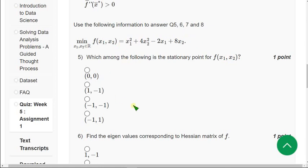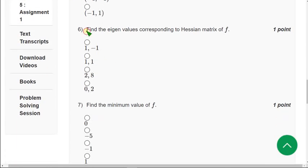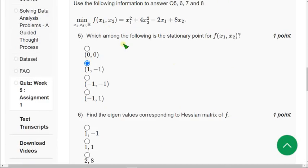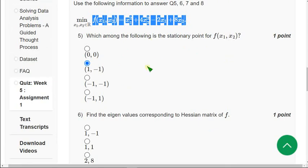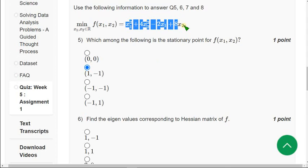So, when I read this, I have got the answer for fifth question as option B, (1, -1). So, mark second option. And moving on to the sixth question. Find the eigenvalues corresponding to Hessian matrix of f. So, here, what is f? f is this equation. We have already mentioned that, from fifth to eighth equations, it is based on this equation only.